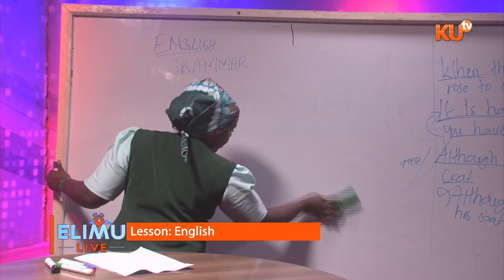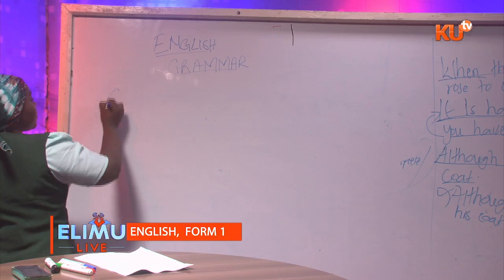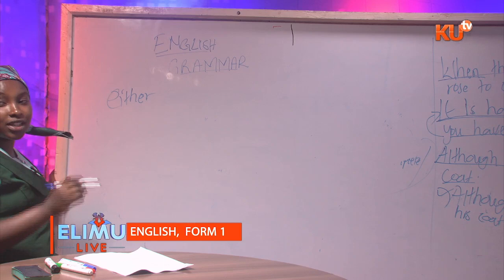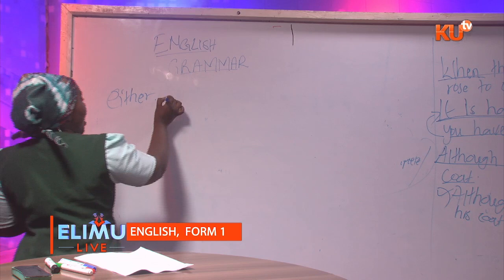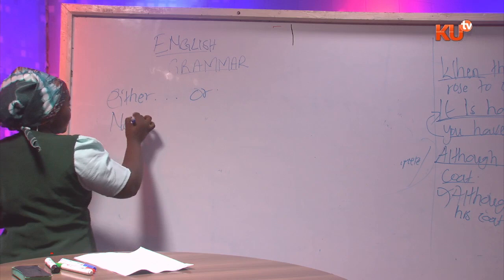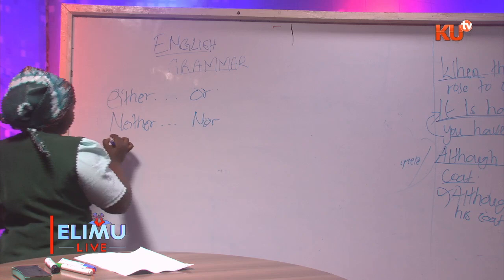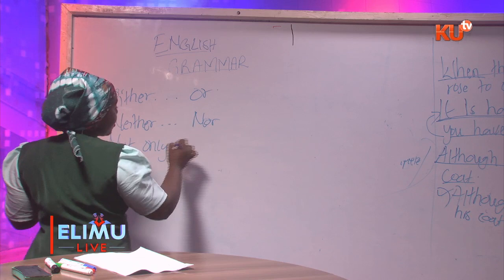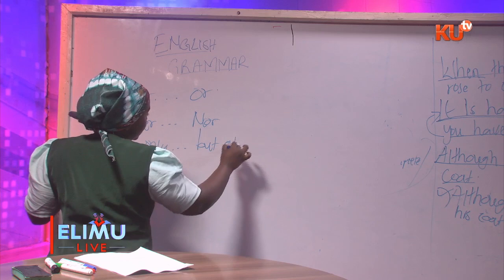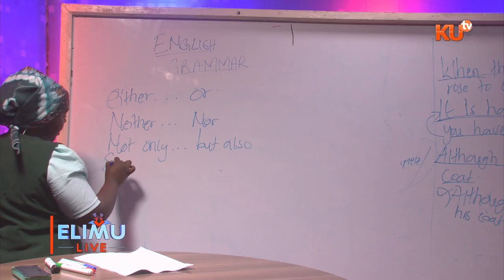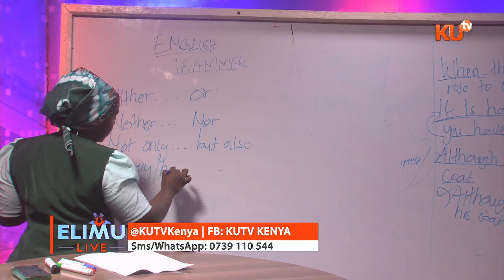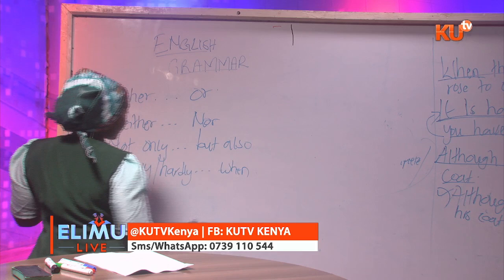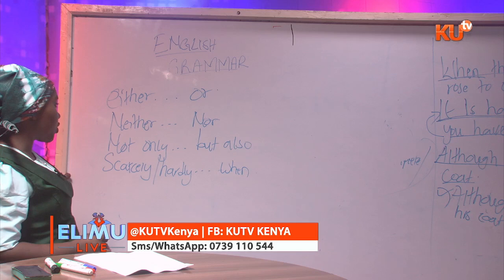Examples of correlative conjunctions: 'either/or' — when students see 'either,' they already know the other pair is 'or.' 'Neither/nor' — when they see 'neither,' they know the other is 'nor.' 'Not only/but also' — when they see 'not only,' they know 'but also' follows. 'Scarcely/when' or 'hardly/when' — when they see 'scarcely' or 'hardly,' they know 'when' follows.